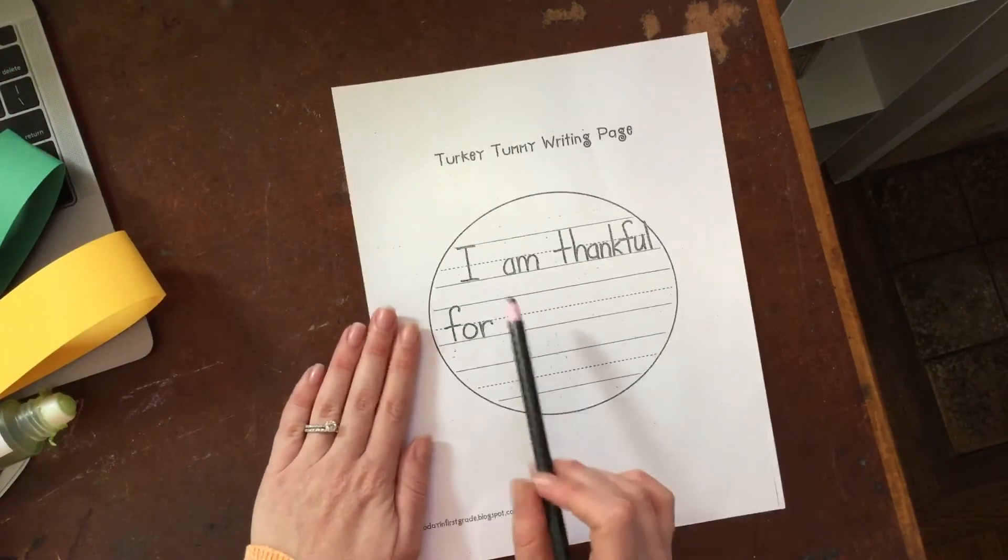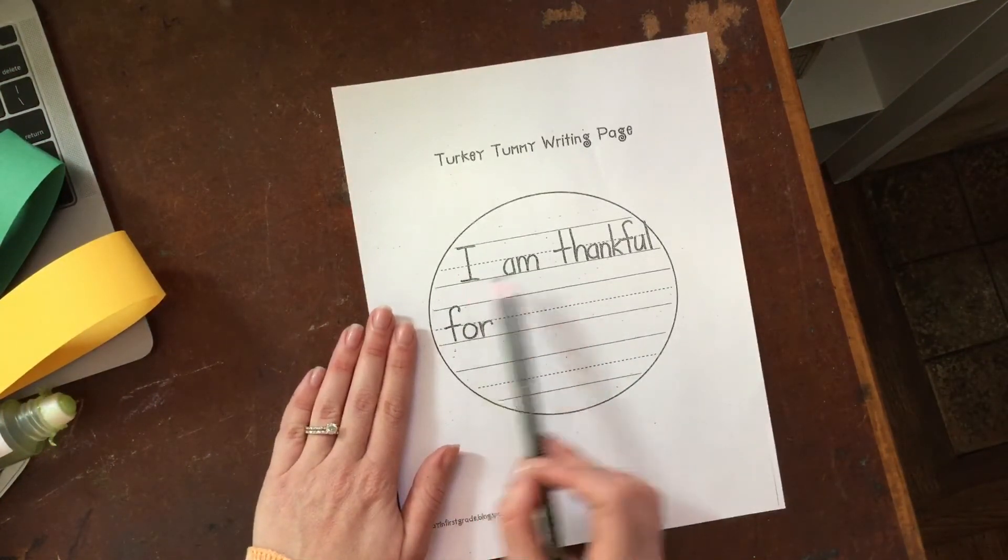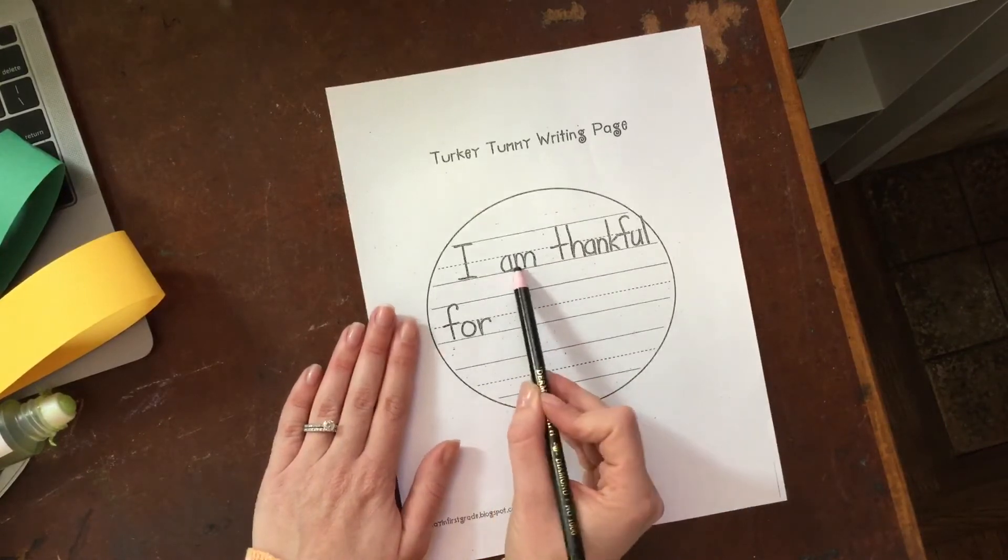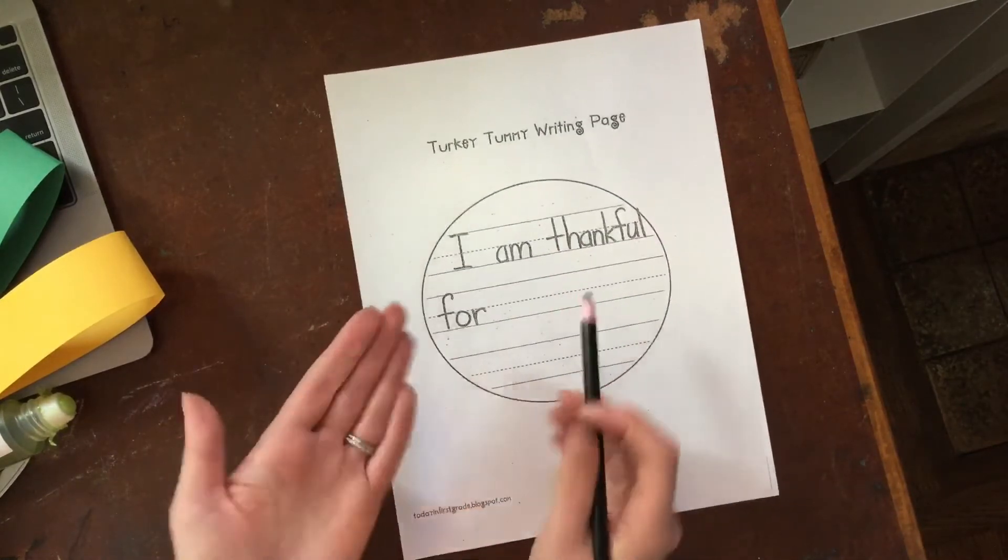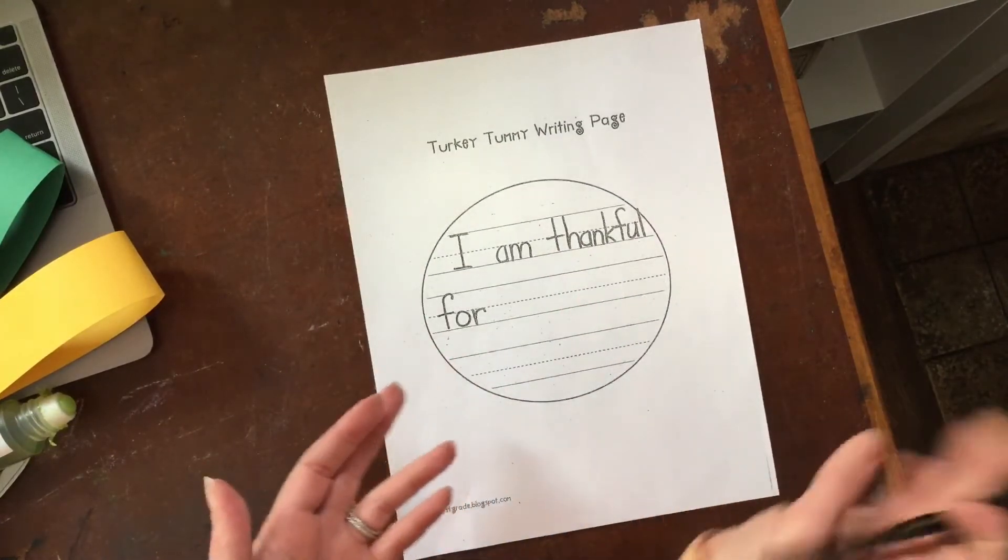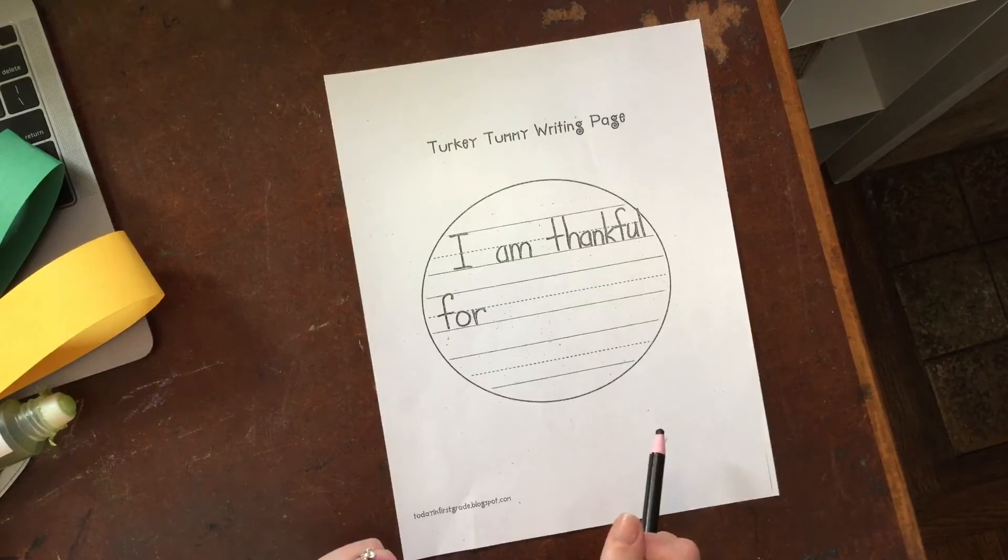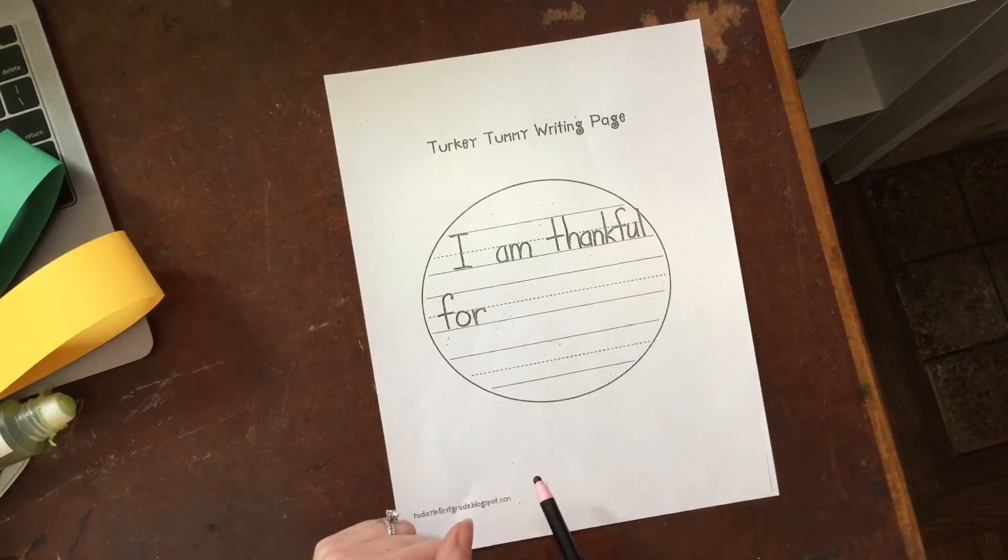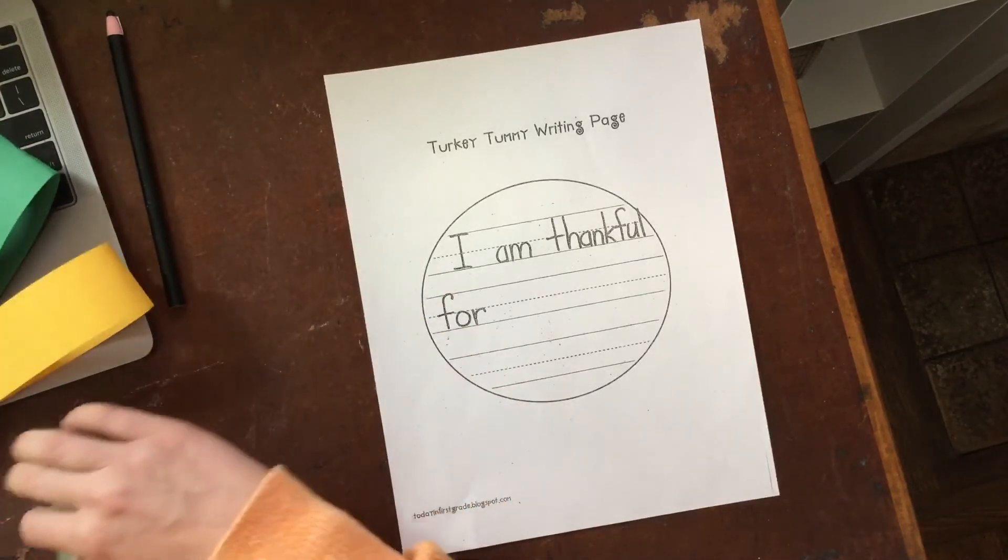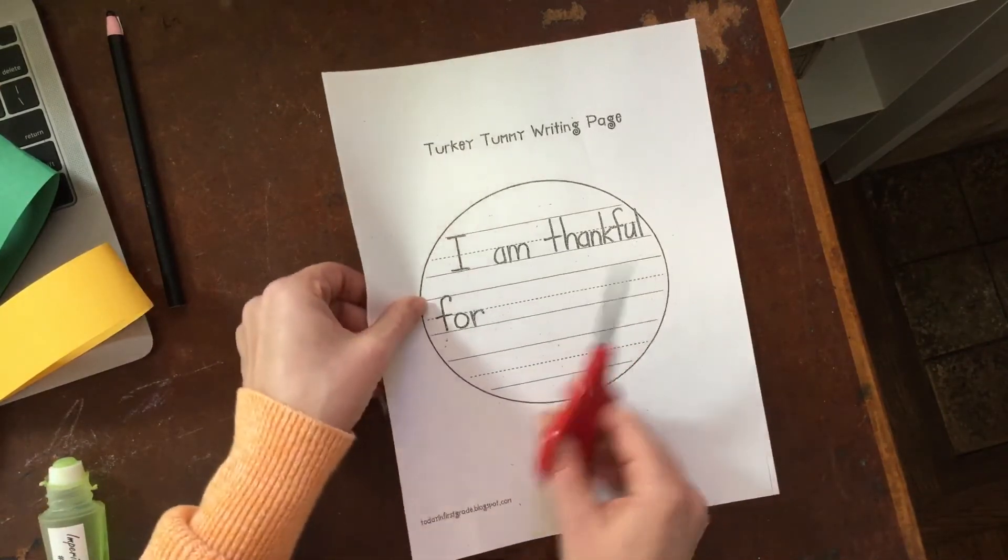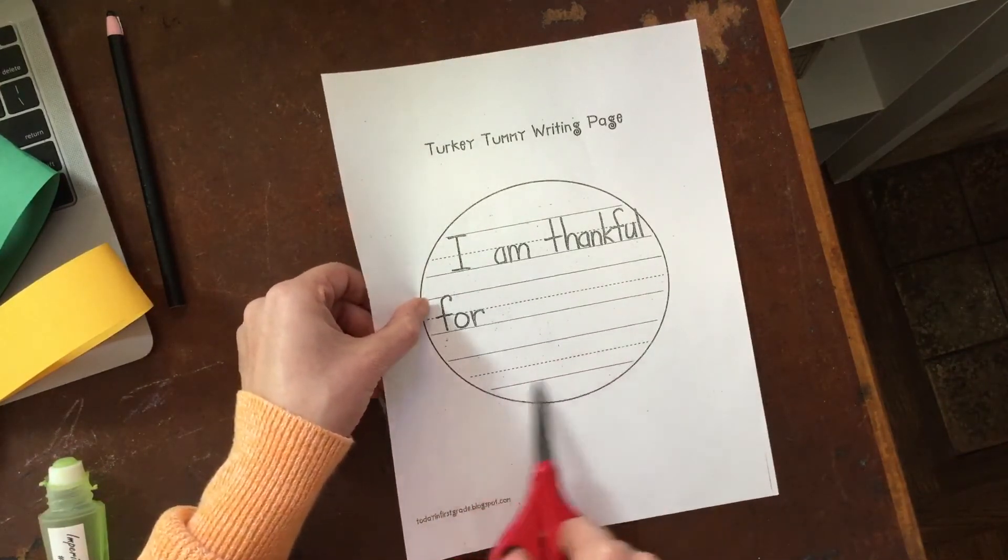So it has a sentence starter for you. It already has this part. It says, 'I am thankful for.' And then you have to decide what you are thankful for and sound it out. I'm not even going to do one. I'm not even going to write one and give you an example because sometimes when I do that, kids just copy and write the exact same thing that I did. And I want you to think of something that you are thankful for. And I want you to sound it out on your own. I don't want you to copy me. So that's what you would do next. You would write what you're thankful for.